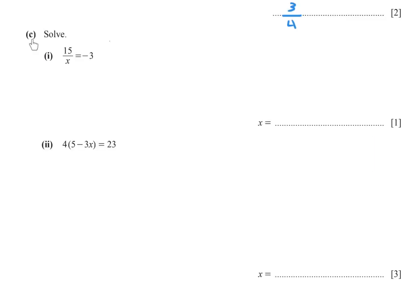Part (c): Solve 15 over x equals negative 3. Cross multiply: 15 equals negative 3x. Divide by negative 3: x equals negative 5.